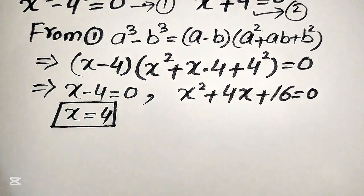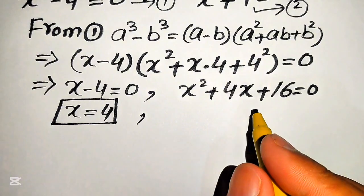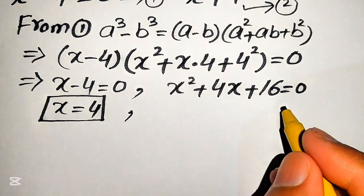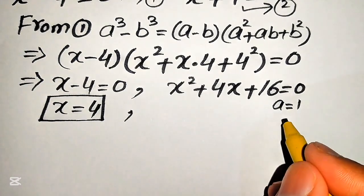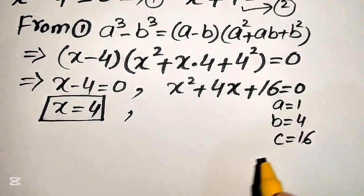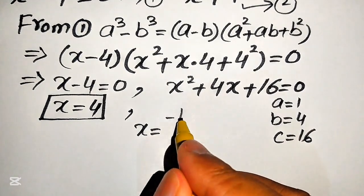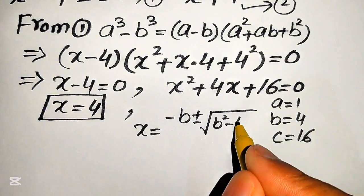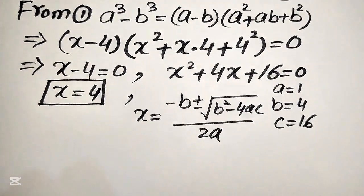This is our first real solution of the given problem. Now in order to find the other solutions we need to solve the quadratic equation x squared plus 4x plus 16 equals to 0. We apply the quadratic formula, where the coefficients are a equals to 1, b equals to 4, and c equals to 16. The quadratic formula is x equals minus b plus minus square root of b squared minus 4ac divided by 2a.